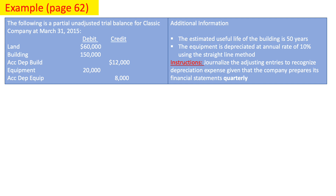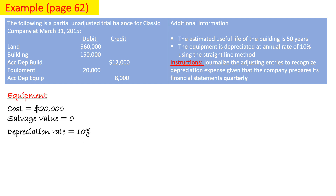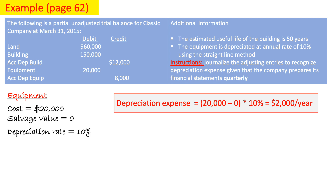Now let's prepare the depreciation for the equipment. The cost of the equipment is $20,000, salvage value is $0, and the depreciation rate is 10%. Since we're given the rate, we use the rate formula: Depreciation Expense = (Cost minus Salvage Value) times Depreciation Rate. So: ($20,000 minus $0) times 10% = $2,000 yearly.